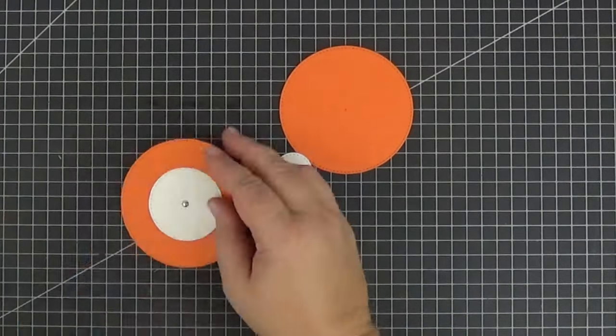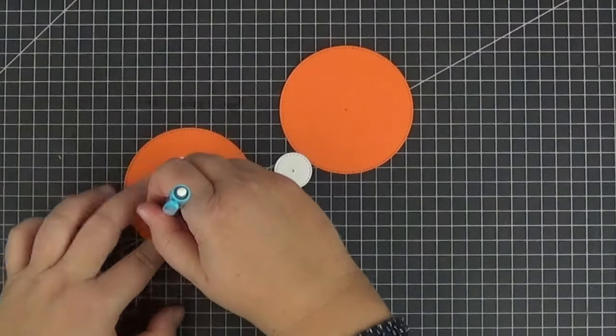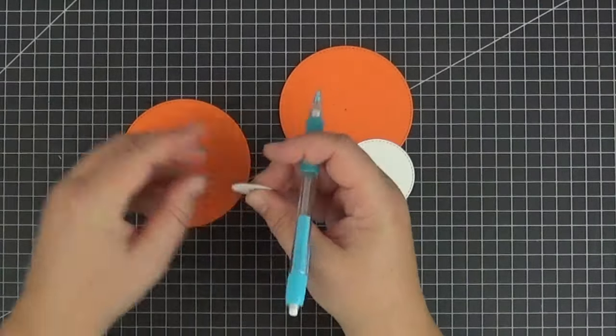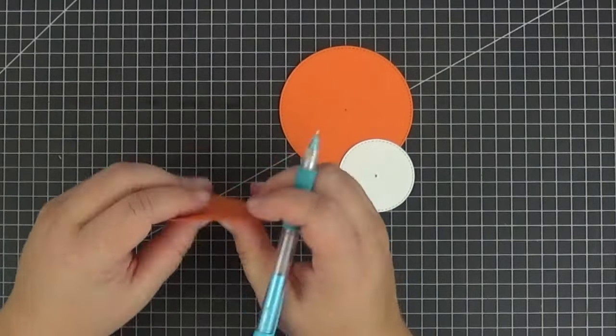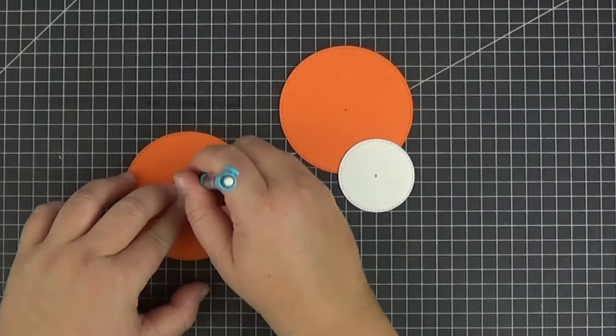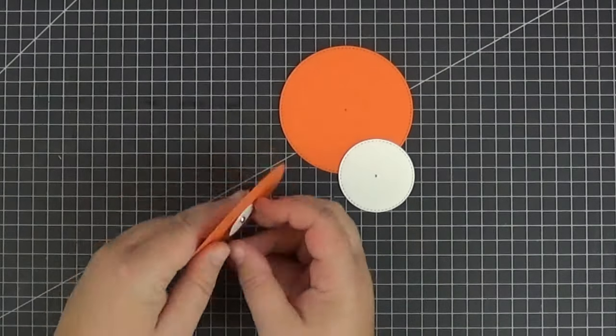Now we can link two of them with a brad and trace around the smaller one with a pencil. Let's repeat that with the one inch circle. I hope you can see what I'm doing, the orange might be too distracting, especially for the next step.